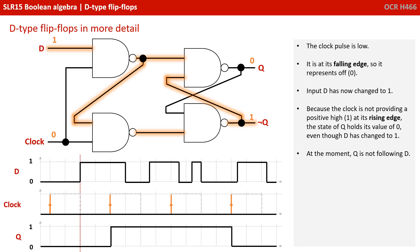The clock pulse is still low, it's actually at its falling edge, so it represents OFF or zero. Input D is changed to one, but because the clock is not providing a positive high at its rising edge, the state of Q holds its value of zero, even though D has changed to one. At the moment, we can say that Q is not following D.